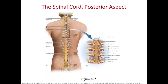You have 31 pairs of spinal nerves from the spinal cord. The spinal cord ends approximately at L1-L2, and what continues down are the dorsal and ventral roots of the lowermost part of your spinal cord.